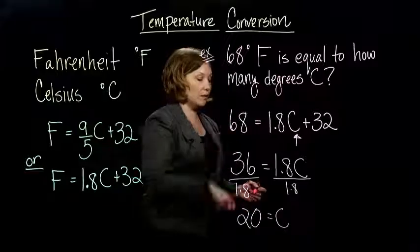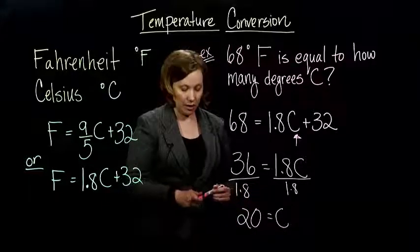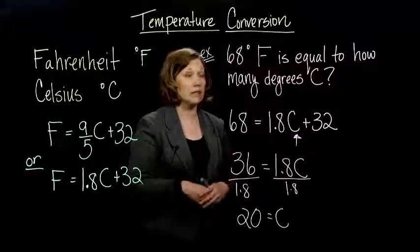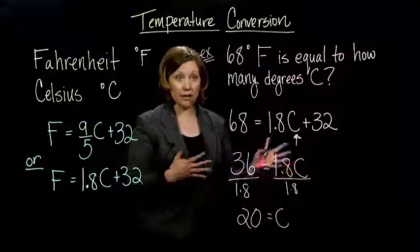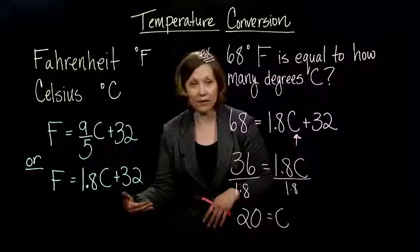36 divided by 1.8 is 20. So, 68 degrees Fahrenheit is 20 degrees Celsius, and that's all there is to it. So, if you're given the Celsius temperature, and you want to get the Fahrenheit temperature, you pretty much just have to plug into the equation and do the computation.